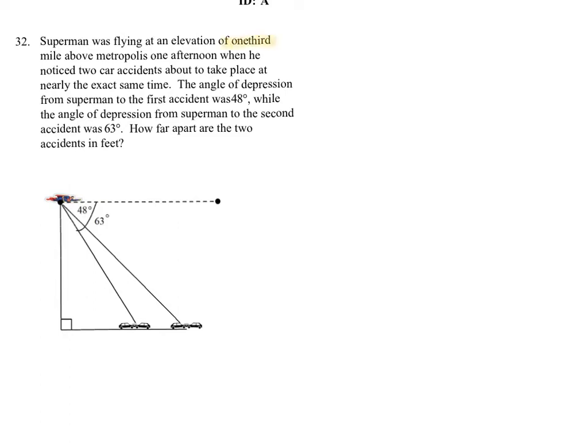The first thing I see is that Superman is flying at one-third mile above Metropolis. So he's a third mile up. And then we get some angles here. We got an angle of depression. We have two angles of depression actually. And they draw that for us here. So we see that this first angle must be the smaller one. And then this second angle must be the larger one. And then we got to figure out what is the question asking. And the question is asking how far apart the two accidents are in feet. That's really important there, that little in feet. We understand that our final answer has to be in feet.